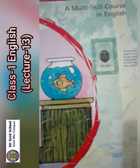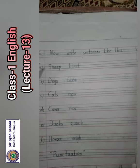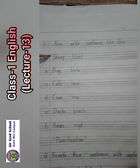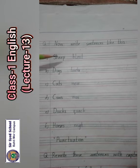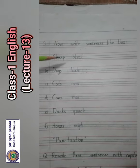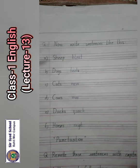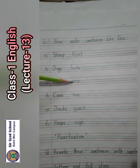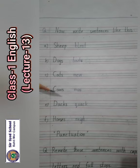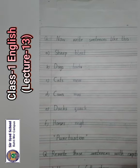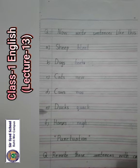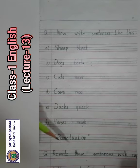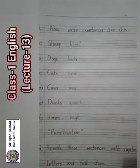You should now write sentences like this. Sheep bleat. Dogs bark. Cats mew. Cows moo. Ducks quack quack. Horses neigh. These are the sounds of the animals.